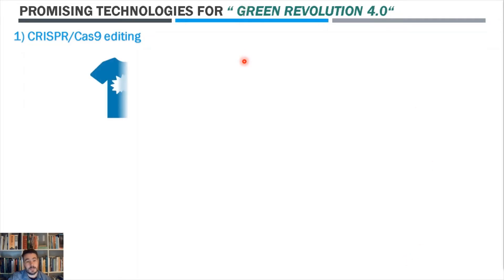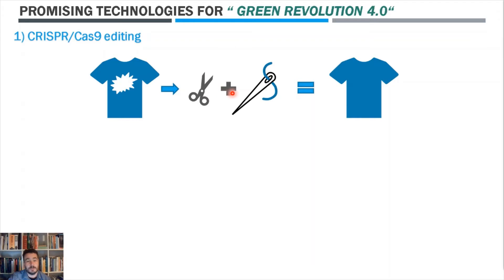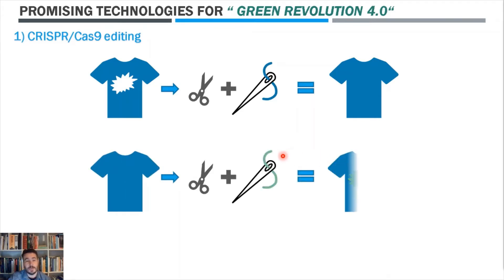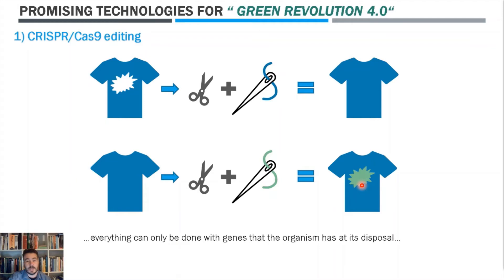We can imagine CRISPR as a pair of scissors and a needle with a thread. This system can sew a hole on a t-shirt and thus repair it without losing its quality. But this system can also create a completely new hole and then make a patch of a different color, for example. In addition, everything can only be done using the genes that the organism has at its disposal.